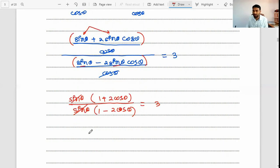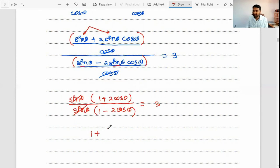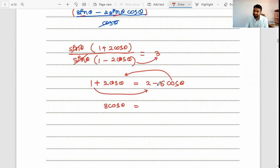1 plus 2 cos θ equals 2 times 3 is 6, so 3 minus 6 cos θ. Take 6 cos θ to the left hand side and 1 to the right hand side. 2 plus 6 is 8, so 8 cos θ equals 3 minus 1.